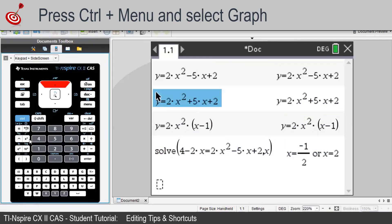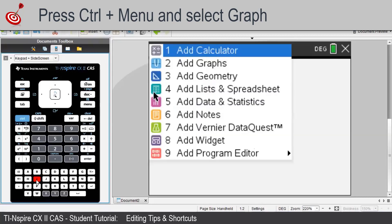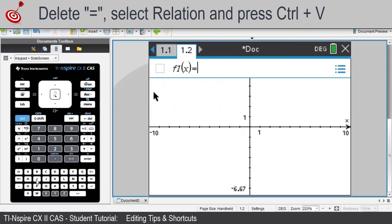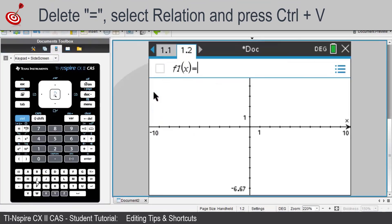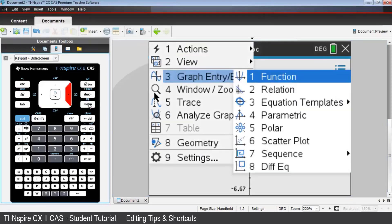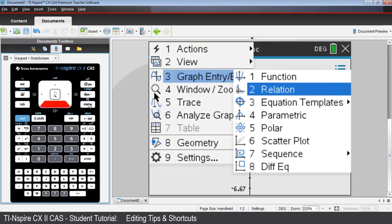Now use the shortcut Ctrl I to insert a new page and choose Add Graphs. It will show the functional view with f1 of x equals in the top line. But we'll want relational graphs, so from the menu, choose Graph, Entry Edit, and choose Relation.